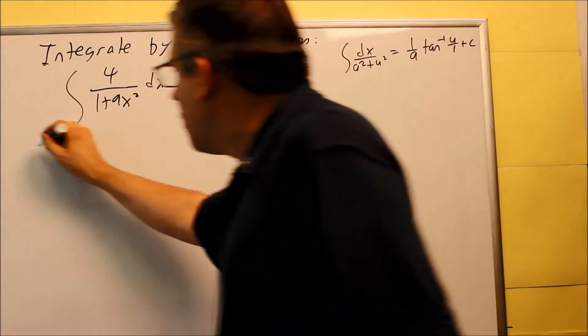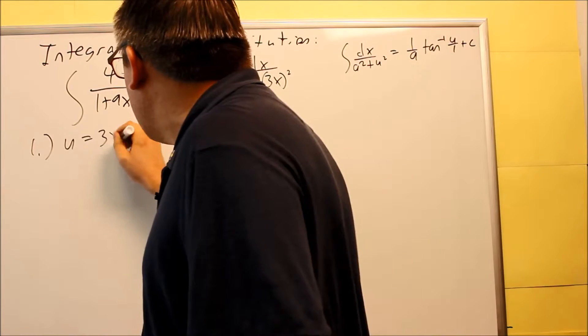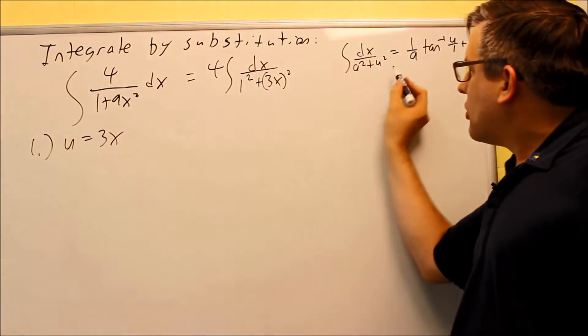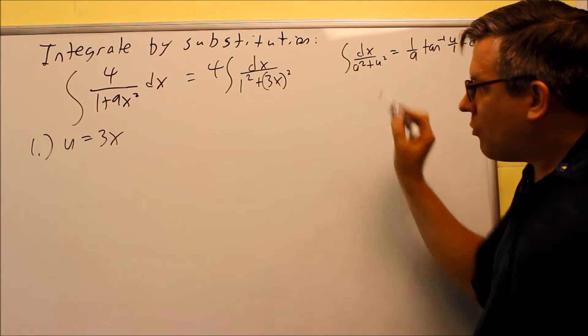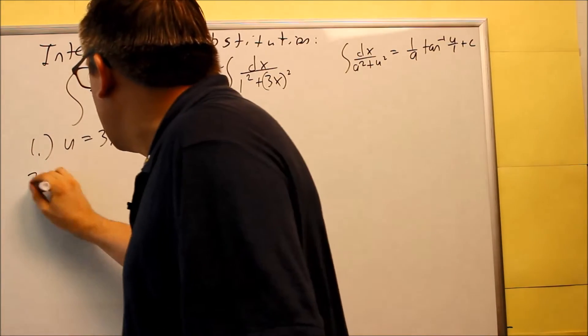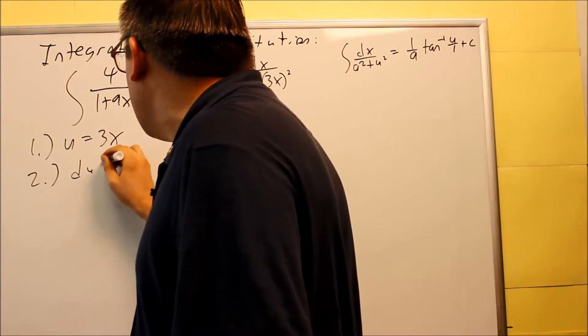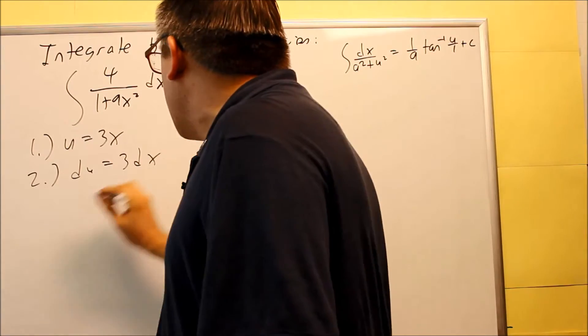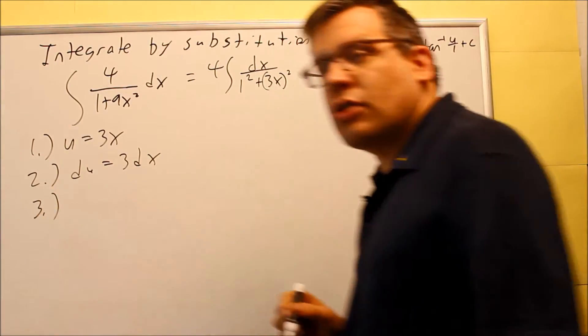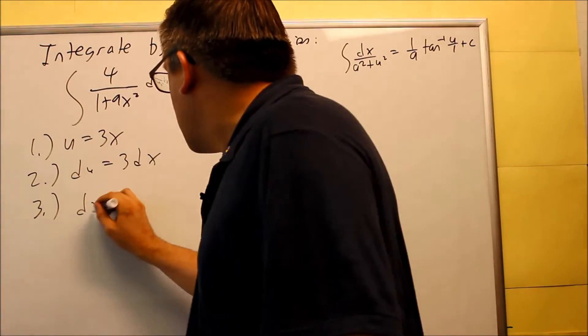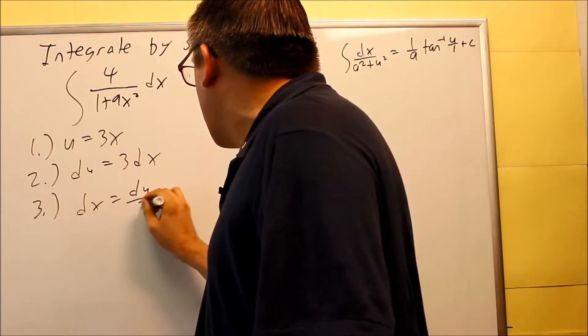Now we still have to do our u. The u this time is going to be just the part that's being squared because now we're going to match the formula that we had before. So u is equal to 3x, derivative of both sides. Your du is equal to 3dx, and then step number 3, you're going to solve for dx. So dx is du over 3.